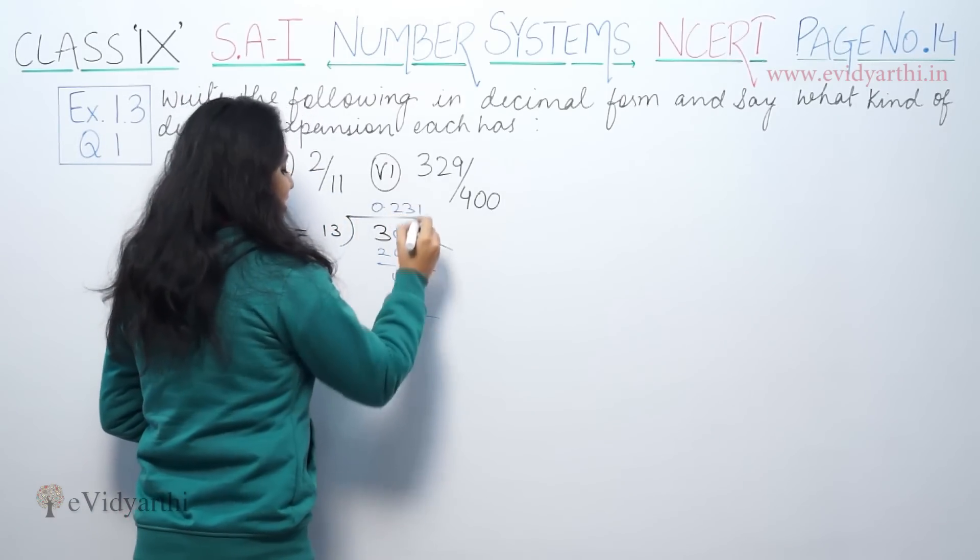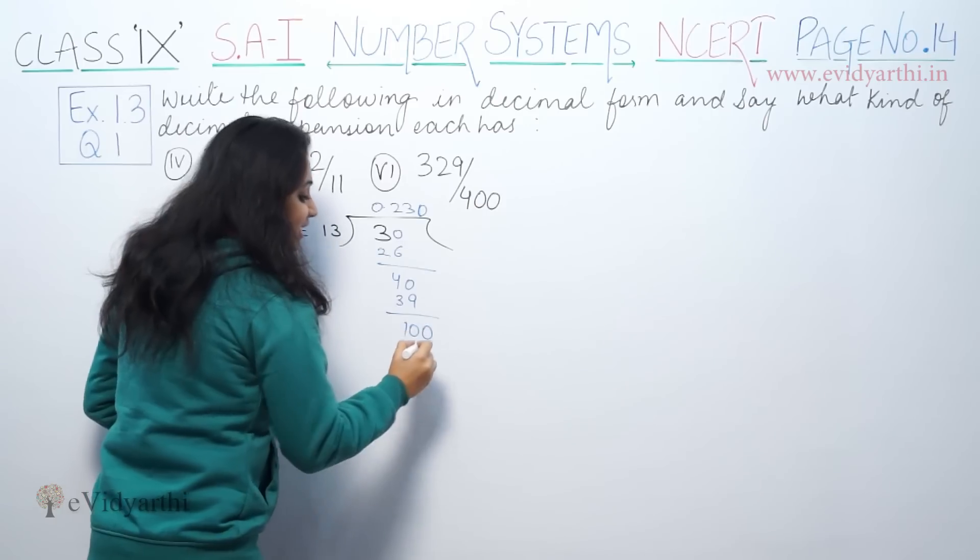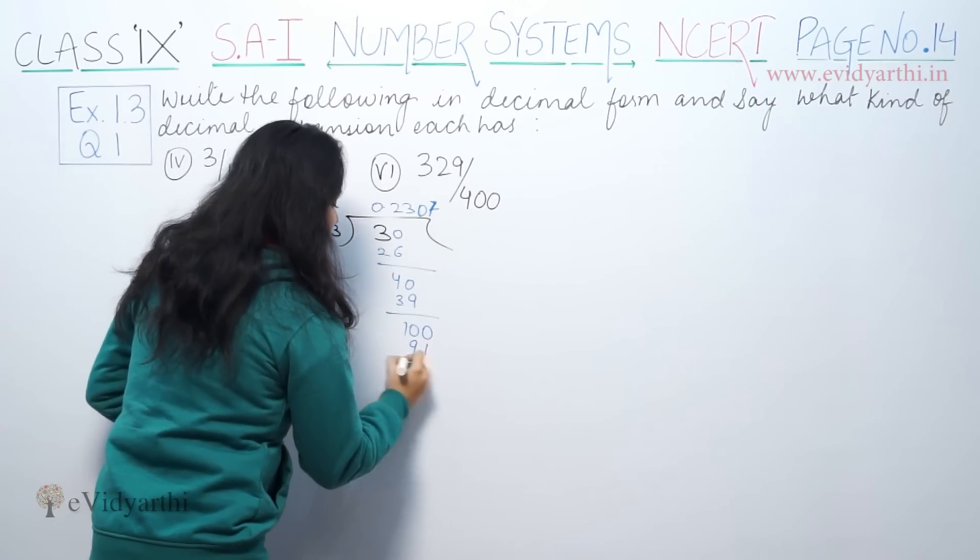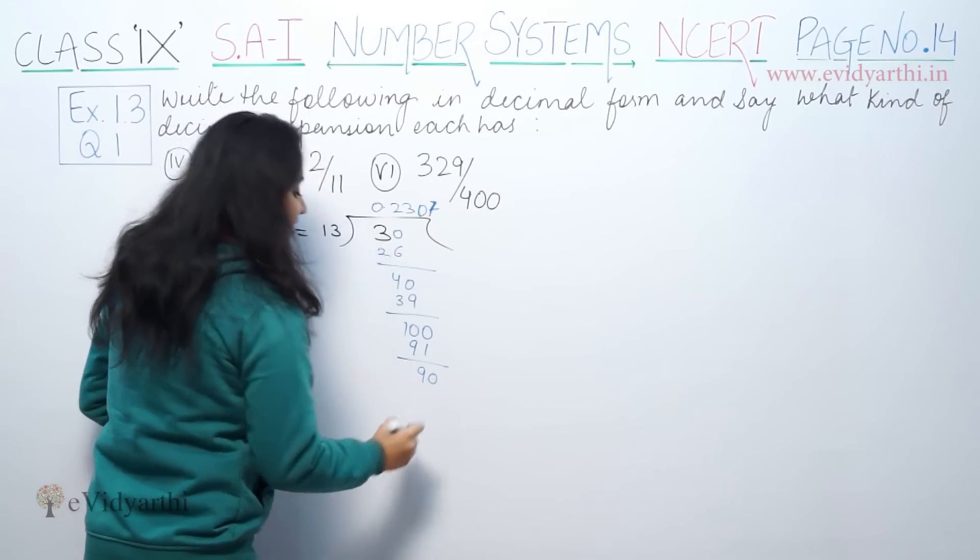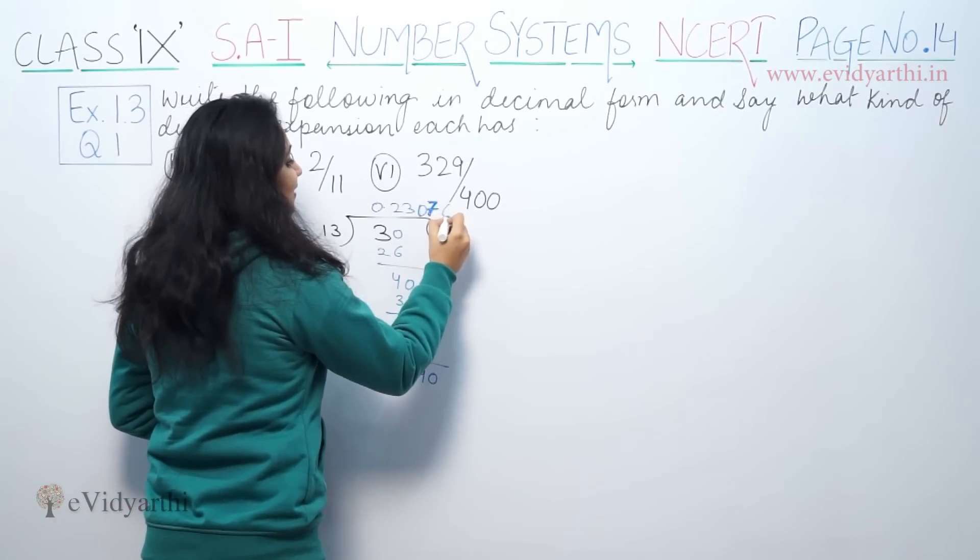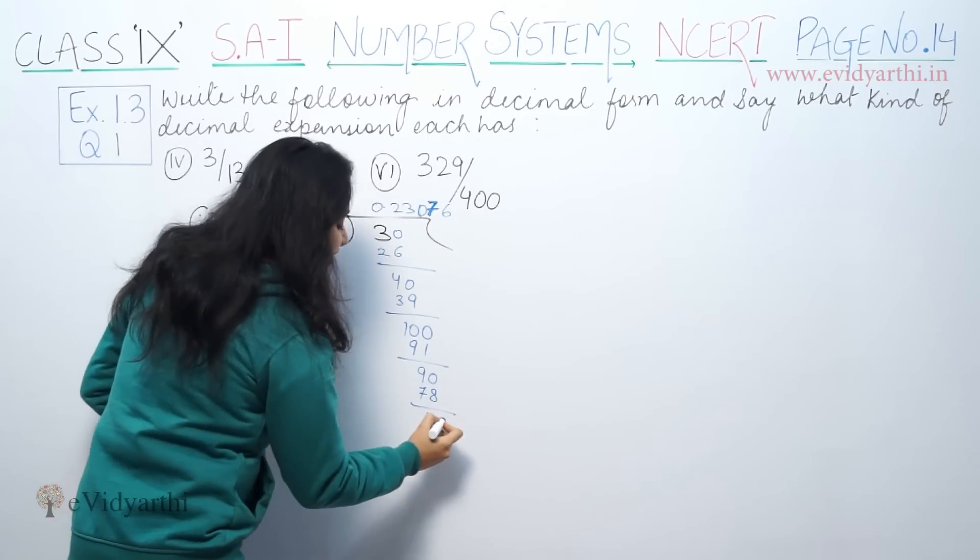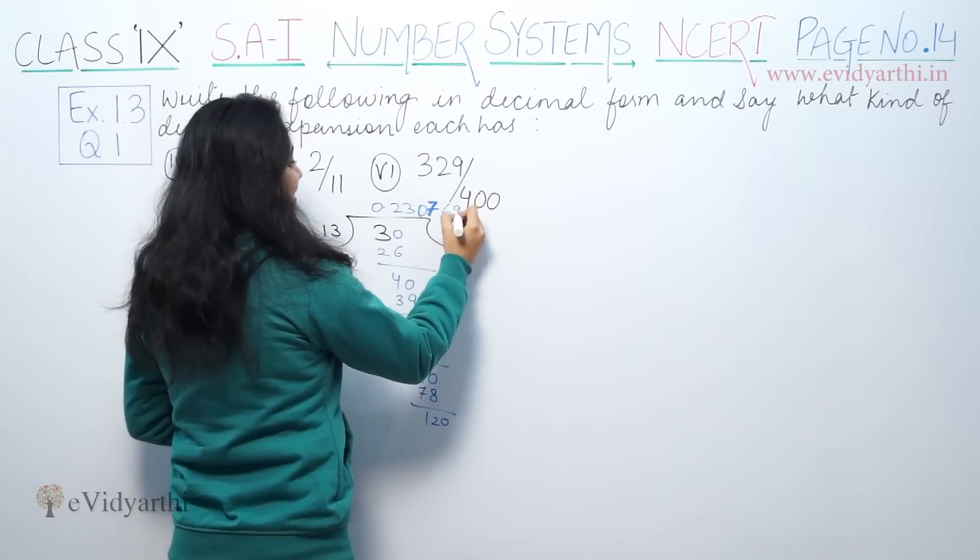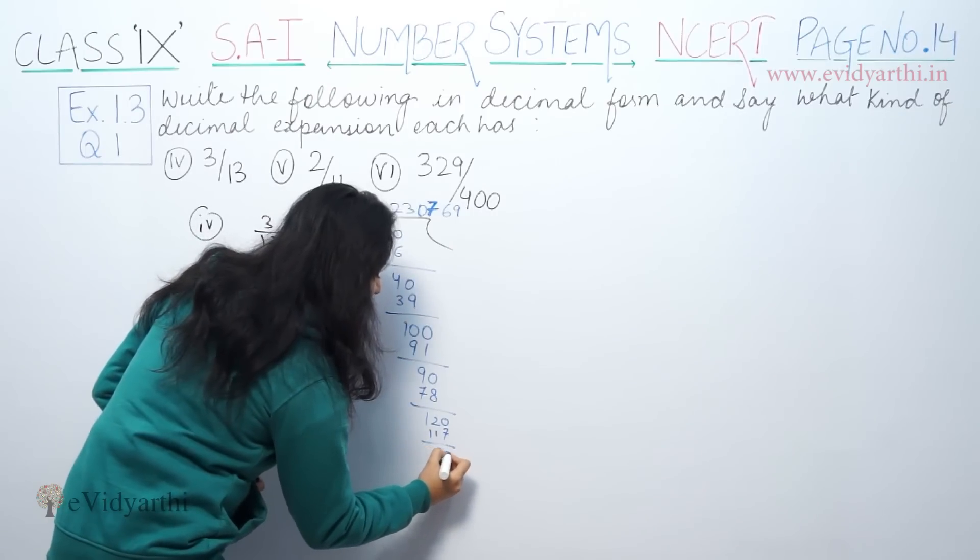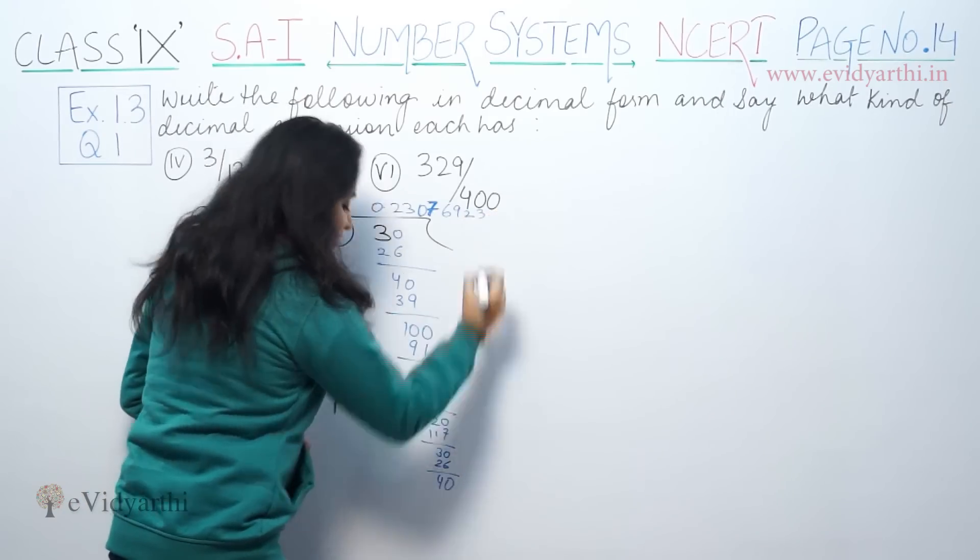That's 1. Then we have 10. So 13 is 90, 13 is 91. I have 9, I have 90. 13 6 times is 78. Then 12. Then 120. So 13 9 times is 117. So 120 minus 117 is 3. Then 13 2 times is 26. Then 13 3 times is 39.